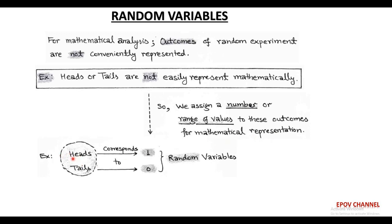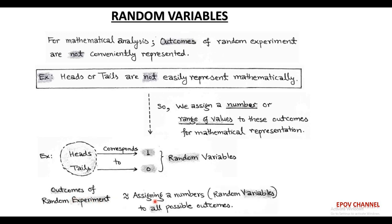For example, in tossing a coin, heads or tails are not represented mathematically, but we have to analyze these random experiments which we face in our communication system. So we assign a number, or a range of values, to the outcomes of these random experiments. These assigned numbers are called random variables and can be expressed mathematically.